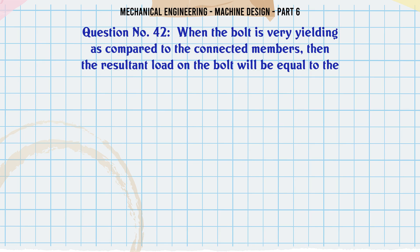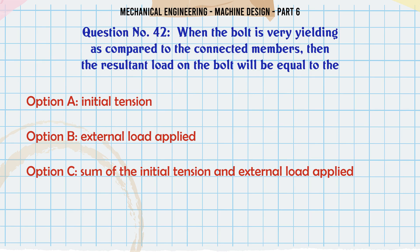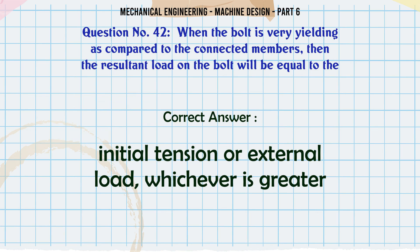When the bolt is very yielding as compared to the connected members then the resultant load on the bolt will be equal to the: A) initial tension, B) external load applied, C) sum of the initial tension and external load applied, D) initial tension or external load whichever is greater. The correct answer is initial tension or external load whichever is greater.